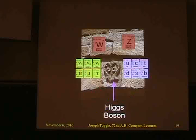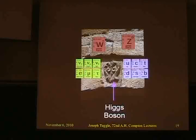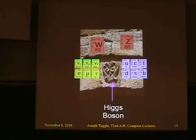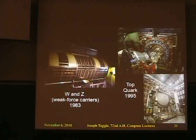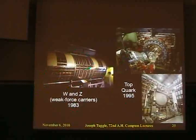Everything I've told you for the last five minutes is all theory, and it would be really nice to actually detect the Higgs and see if our theory matches reality. In broad brush, that's our standard understanding of how fundamental particles interact. What has this done for us? It's provided an explanation for essentially every particle physics experiment we've done for the last 40 years. It was developed in the late '60s and early '70s, and it actually predicted the existence of the W and Z weak force carriers, which were detected at CERN in 1983.